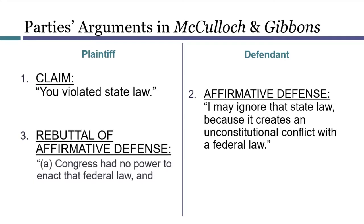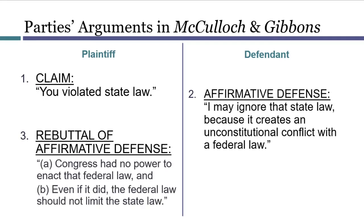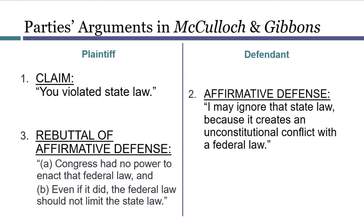First, Congress had no power to enact the federal law. And even if Congress had that power, the federal law should not be understood as a limit on the state law. So each of these opinions was structured to respond to the plaintiff's rebuttal of the affirmative defense. The first topic in each opinion was whether Congress had enacted a valid law — specifically, were any of the federal government's powers broad enough to allow Congress to enact this kind of law? If not, that would be the end of the affirmative defense, and the case would be over.